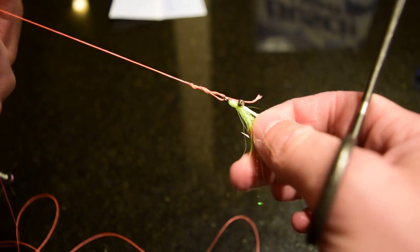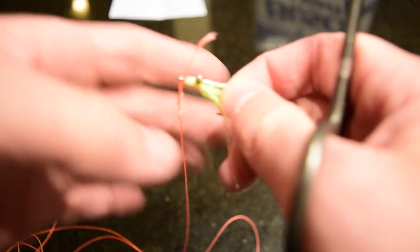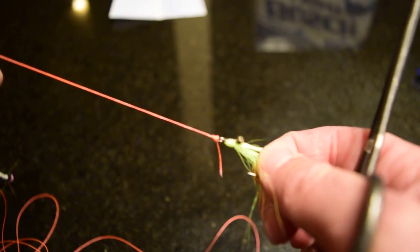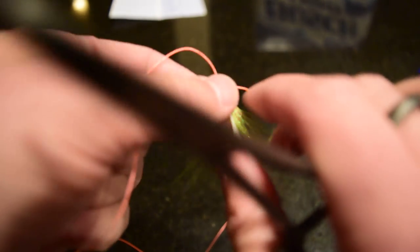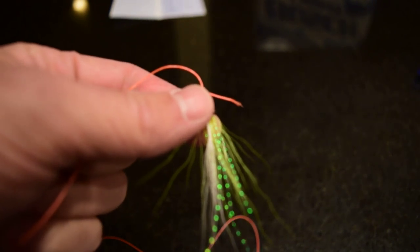Now I'm going to moisten the knot with your saliva or whatever and pull that knot down tight just like that. With that knot, I can tie my fly on my tippet in easily ten seconds or less.